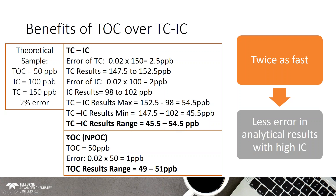With a TOC-direct measurement, you're only doing one measurement, so error is factored in only once. The range is just 49 to 51 ppb — much more precise than TC minus IC. And it's also twice as fast. Some people argue that TC doesn't involve purging, but there's a lot of cleanup between TC and IC measurements, so it really does work out to about twice as fast with TOC.